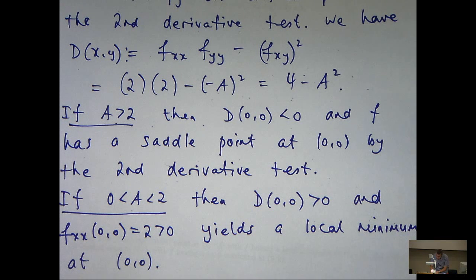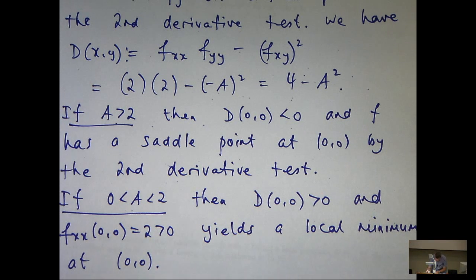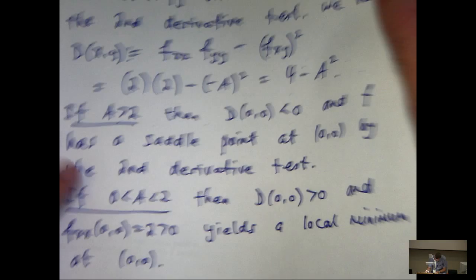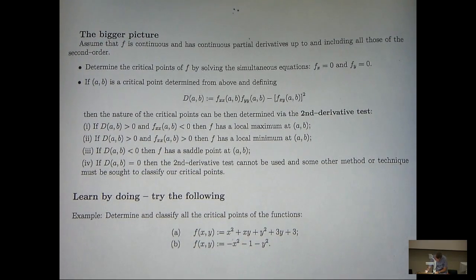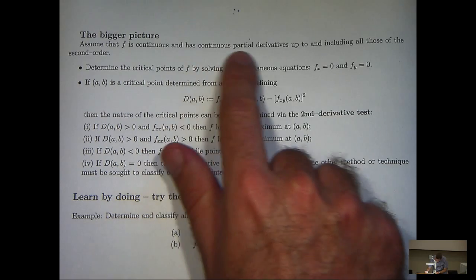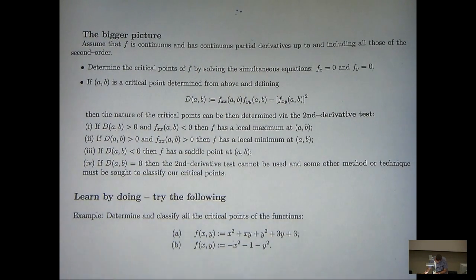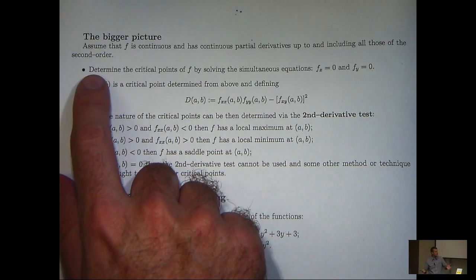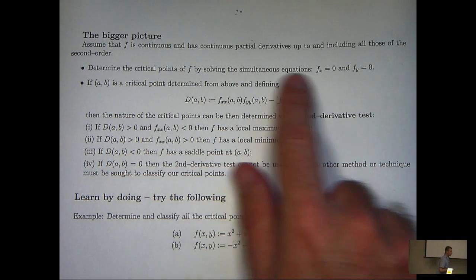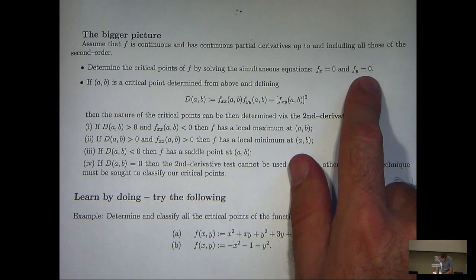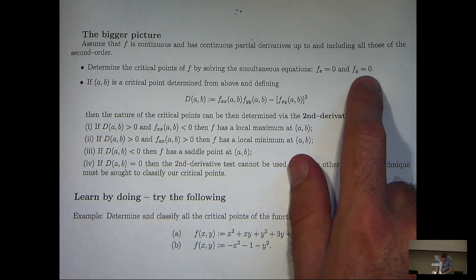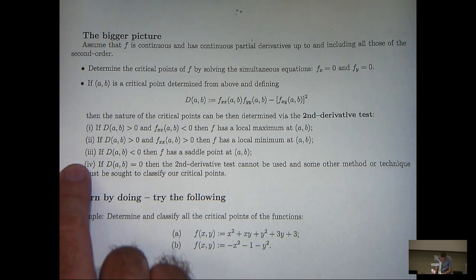Now we've finished the question. We have first of all located our critical point and then we've classified it using the second derivative test. Let's have a look at the bigger picture though. What are some ideas you can use in all sorts of problems? Assuming that f is continuous and has continuous partial derivatives up to including all of those of the second order. Now this assumption was automatically satisfied in our example because f was a polynomial. You can determine the critical points of f by solving these simultaneous equations. Once you've found the critical points, you can test it using the so-called second derivative test.